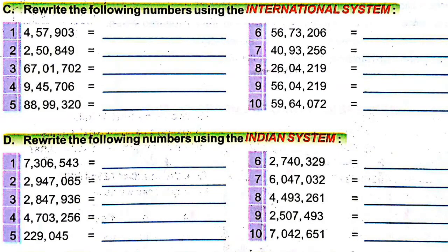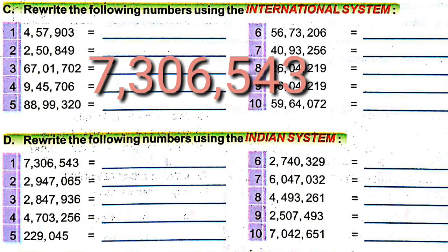The question is: Rewrite the following numbers using the Indian system. We will write the given numbers in the Indian system. The numbers are given in the international system. You see the number — the given number is 7,306,543. There are seven digits.